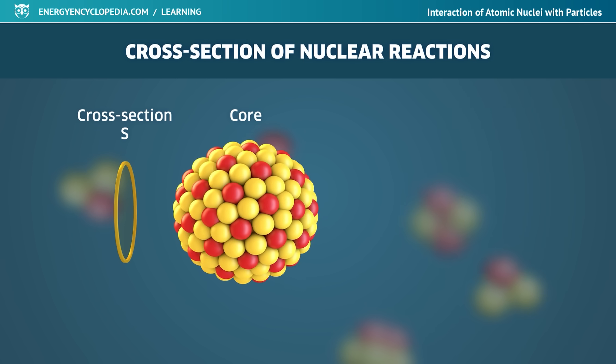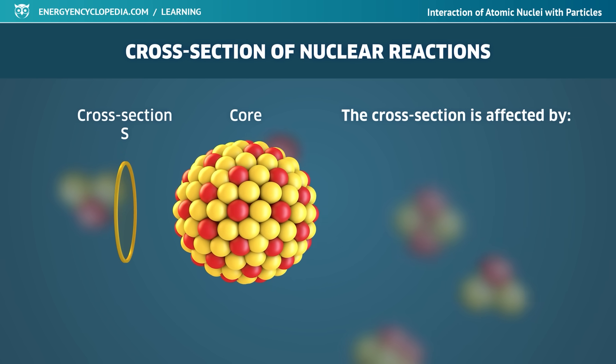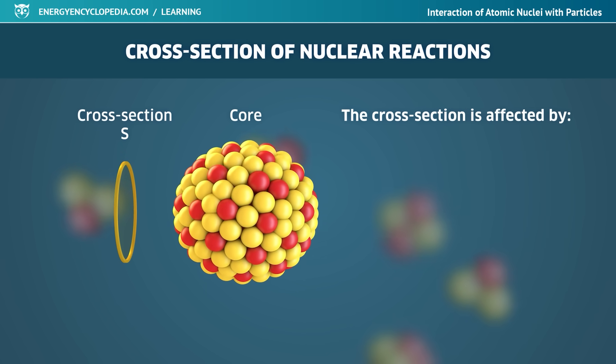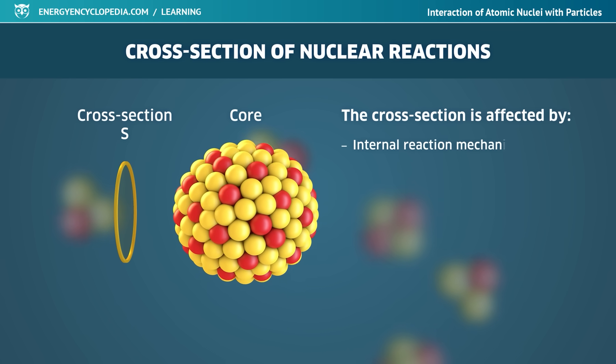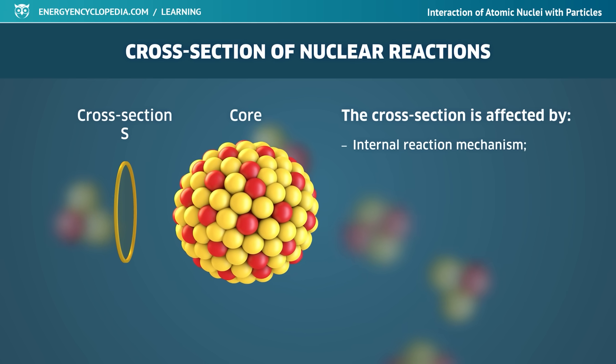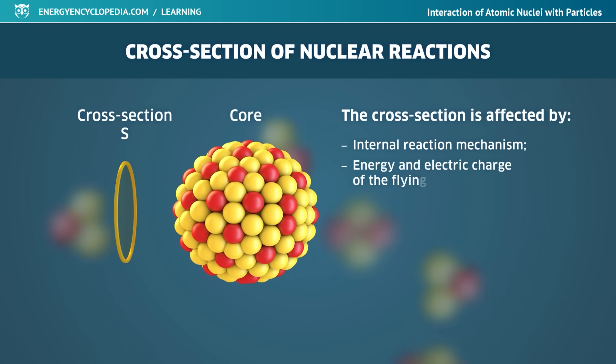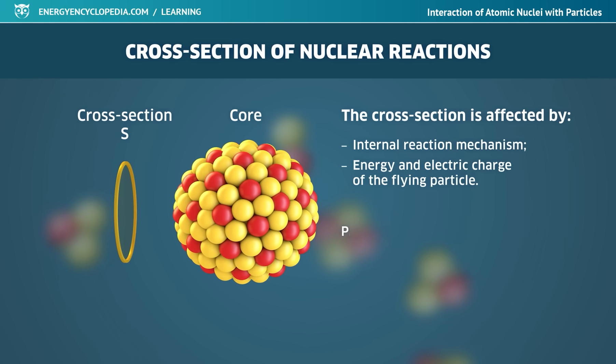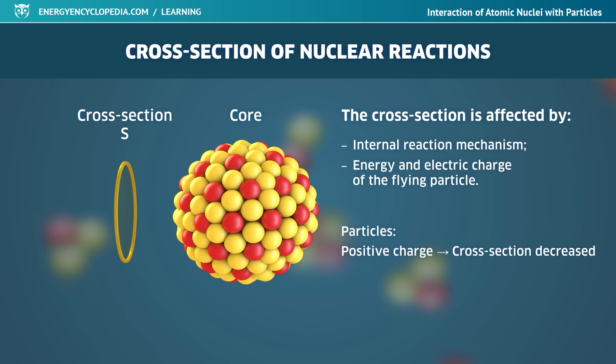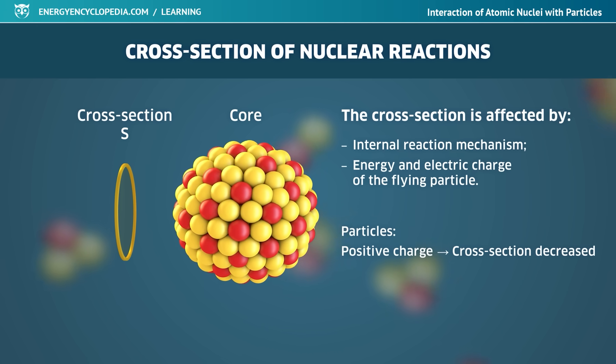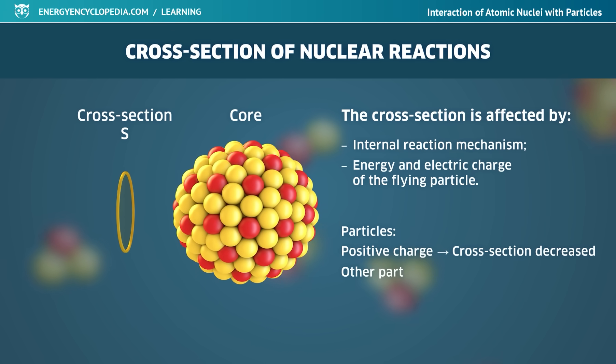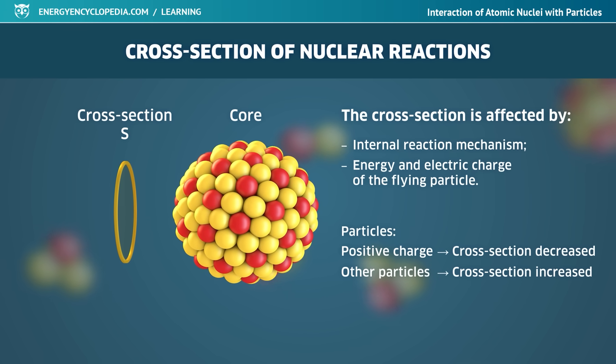The cross-section is usually not related to the geometric cross-section of the target nucleus, but it is significantly influenced by the specific internal mechanism of the given reaction, or the energy and the electric charge of the flying particle. For positively charged particles, due to repulsive forces, the cross-section of the given reaction can decrease. For other particles, on the contrary, it can increase.